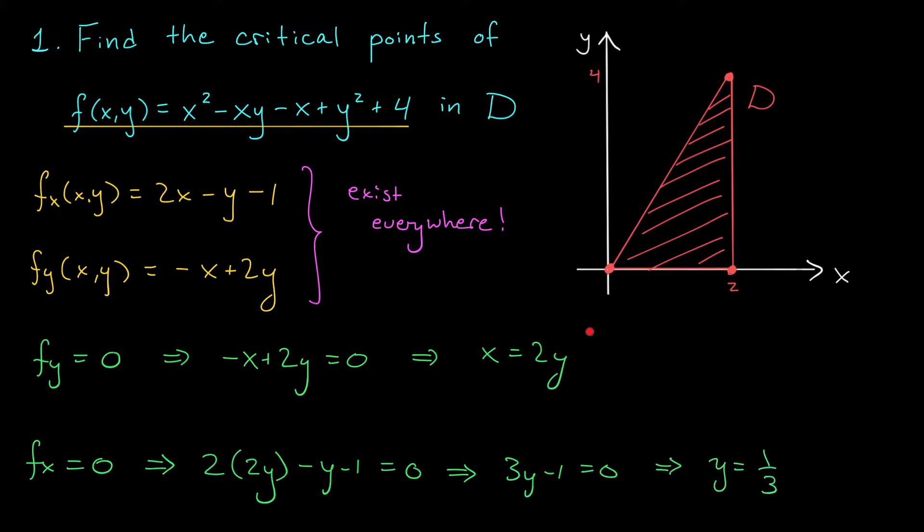But hold on. We know that x has to be 2y. So if y is 1/3, x is 2/3. We get a critical point of (2/3, 1/3), which sure enough lies in our triangular plate. It's this point right here.